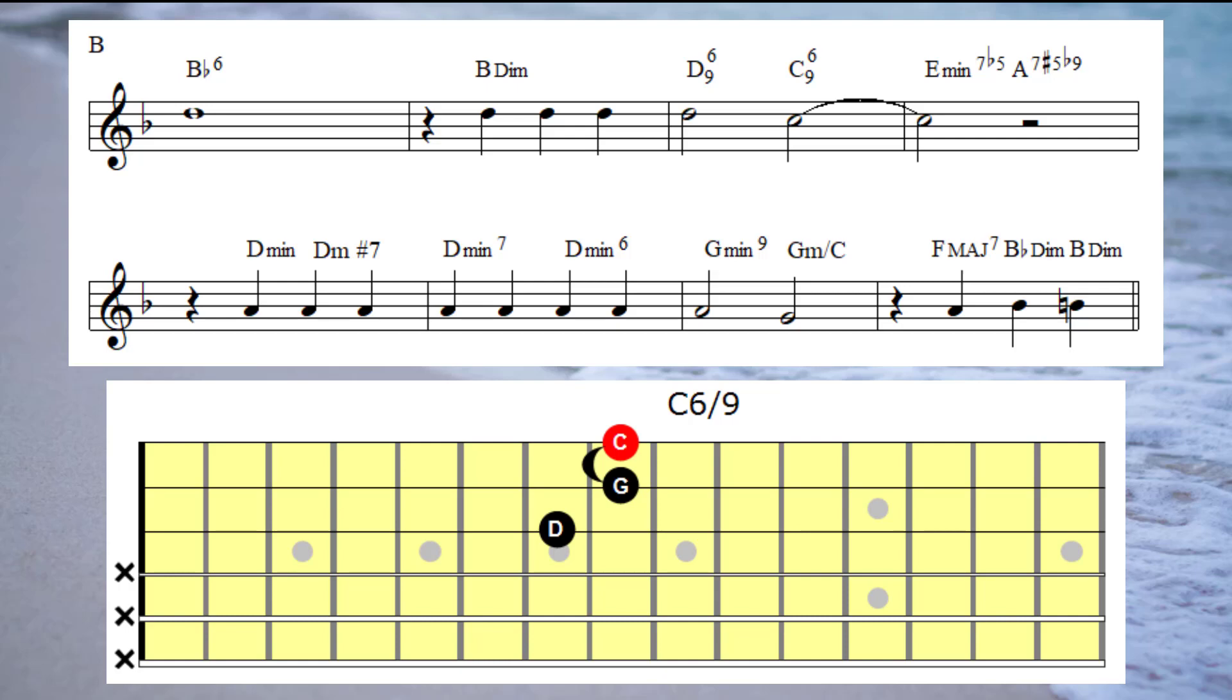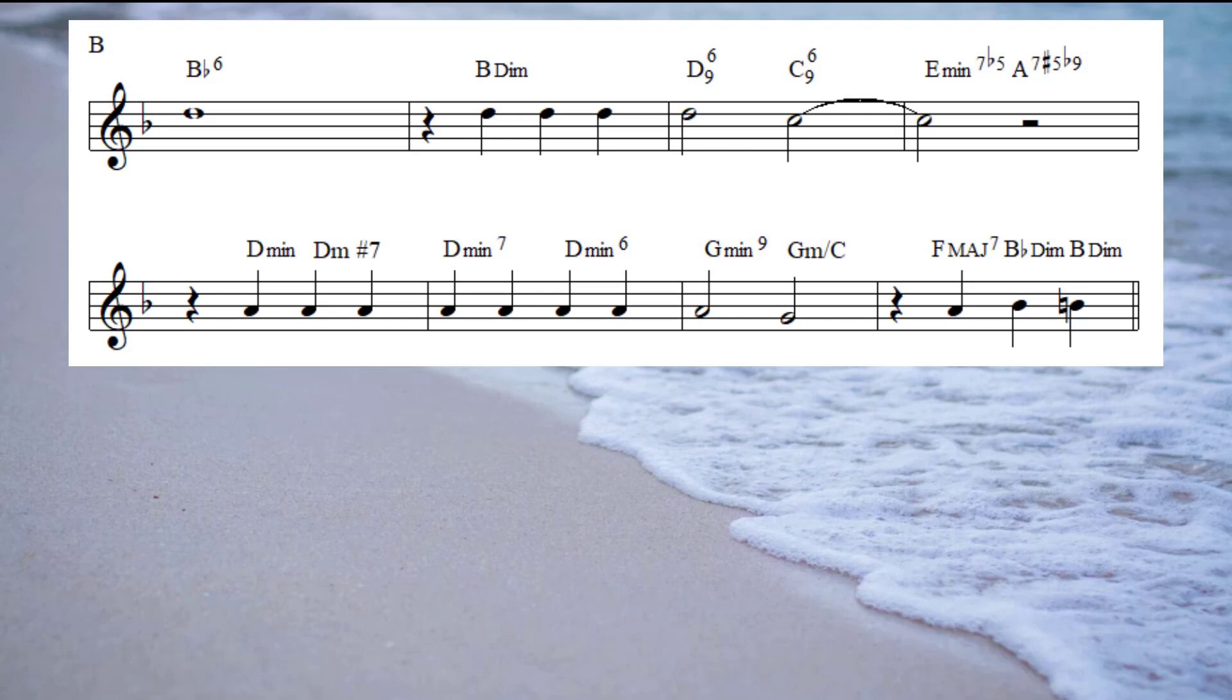Now if you recall, in bar four the basic chord was an A seventh, so now we're just going to elaborate a little bit on that. I'm going to change bar four: instead of just playing A seventh, I'm going to change it into a two five.